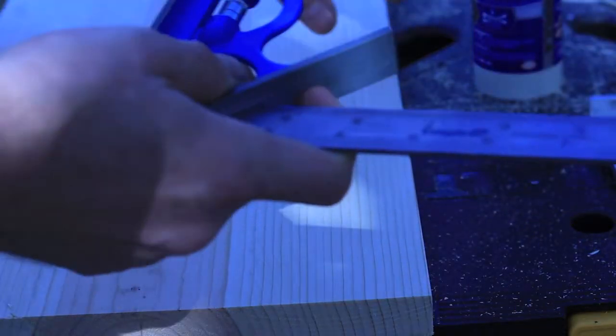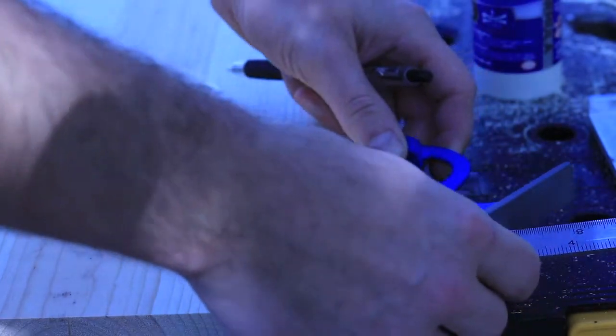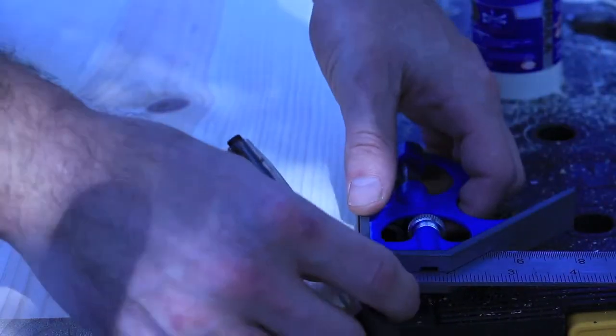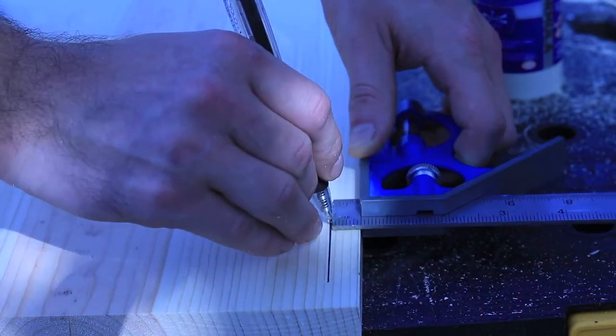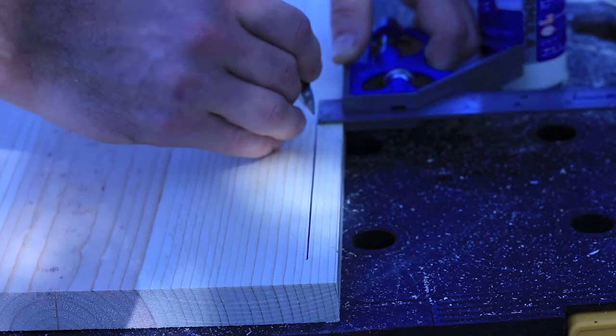For the tea light candle holders, what I like to do is I take a tube of caulk and kind of space it out as evenly as possible, make a little reference line so I know I've got everything kind of lined up, and I take a tube of caulk and just trace around that. That works perfectly for the candles.